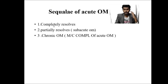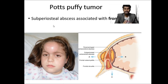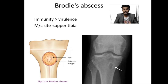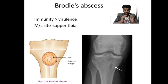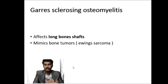After treating acute osteomyelitis, outcomes are: complete cure, partial cure leading to subacute osteomyelitis, or no cure. In subacute osteomyelitis, important MCQ points include: Pott's puffy tumor — a subperiosteal abscess associated with the frontal bone. Brodie's abscess — the most common site is the upper part of the fibula. Here the body's defense is stronger than the organism's virulence, containing pus within the bone. X-ray shows a lytic lesion surrounded by a sclerotic rim.